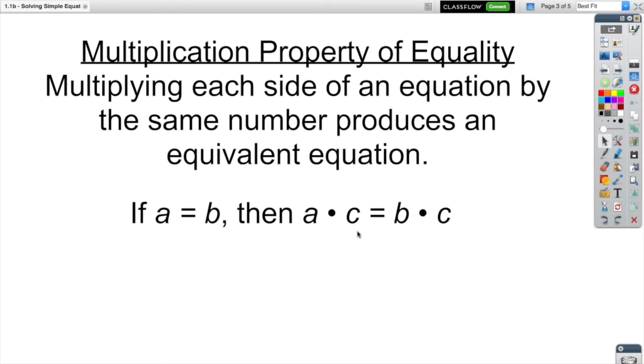On our balance scale example, it would be like tripling the weight on one side of our balance scale and then tripling the other side. Since I'm tripling both sides, the scale is still balanced.